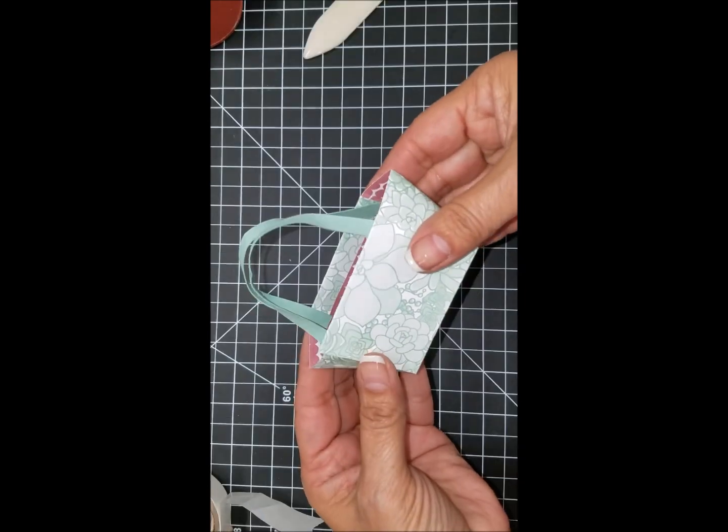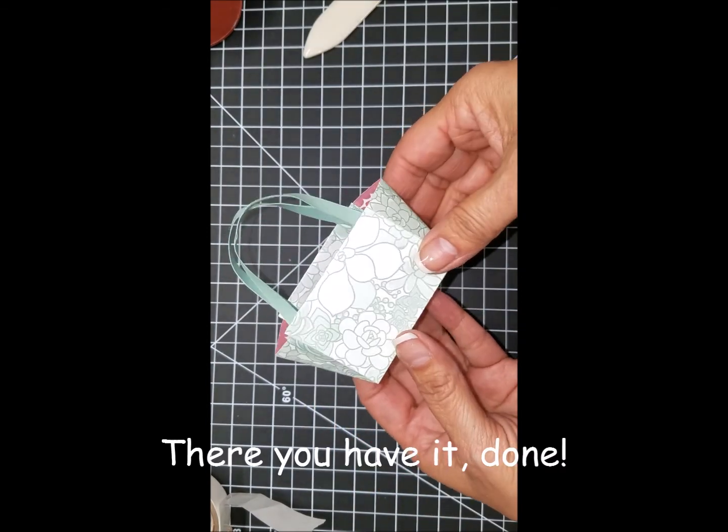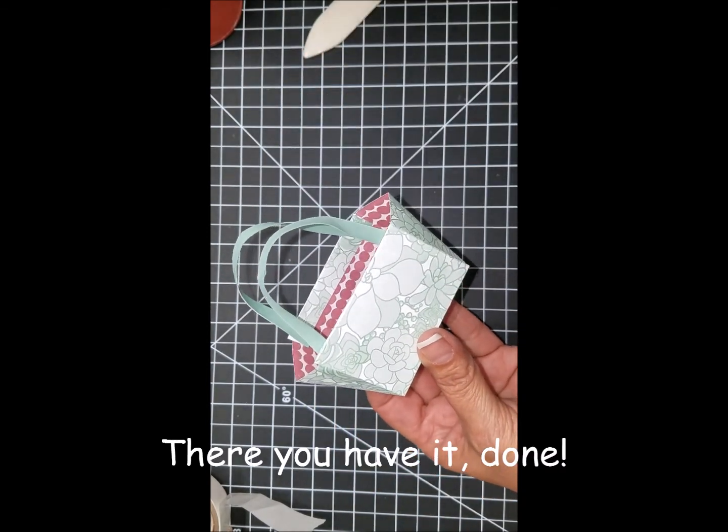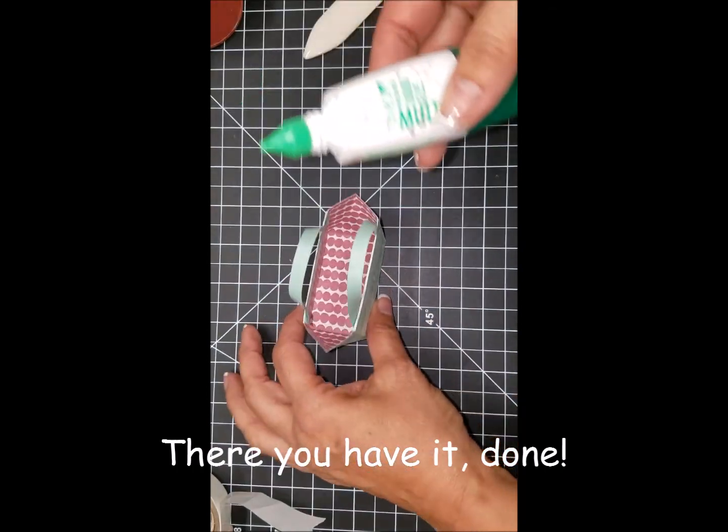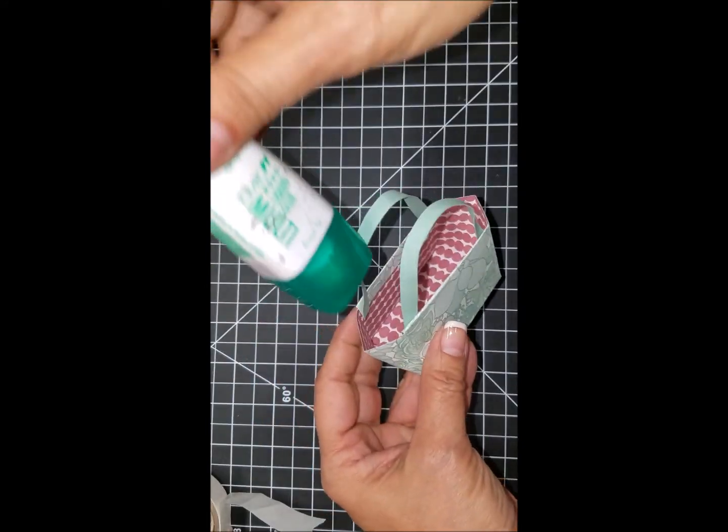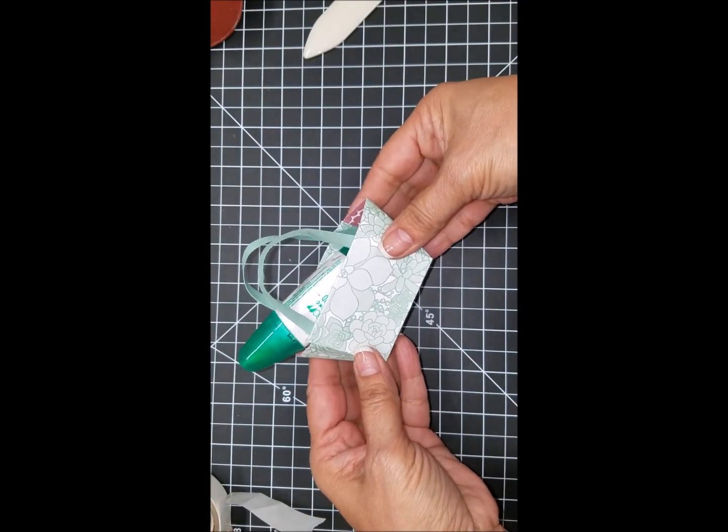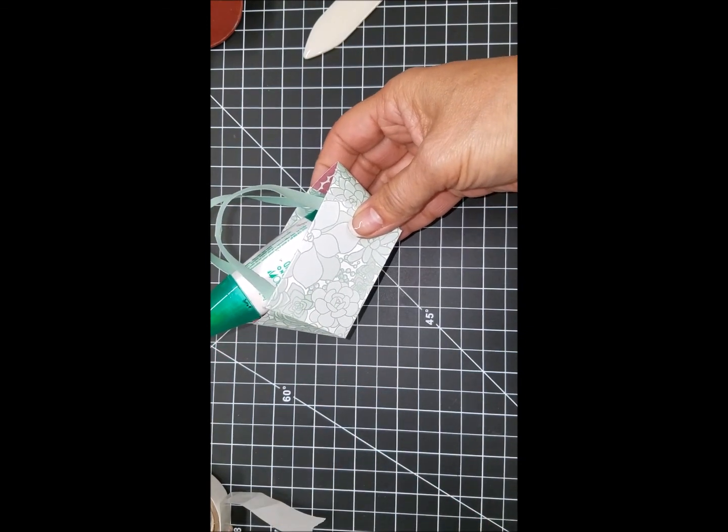There you have it, a cute little bag to share any type of goodies that you want. It's not a tiny bag, as you can see I put my Tombow multi glue bottle in it and it holds it really nicely. So I'm sure you can figure out some quick cute goodies that you want to give away to your friends and family.